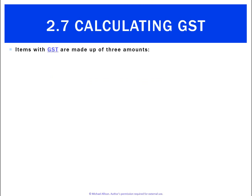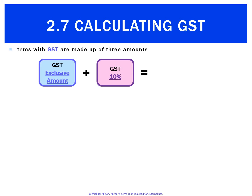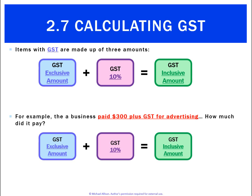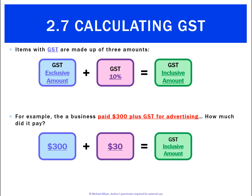Items with GST are basically made up of three amounts: the GST exclusive amount, the GST itself, and adding those together gives us the GST inclusive amount. For a basic example, a business paid $300 plus GST for advertising. The exclusive amount is $300, the GST at 10% is $30, so the inclusive amount is $330.